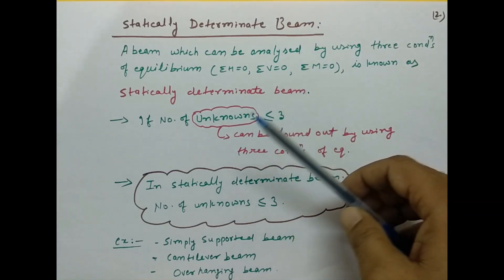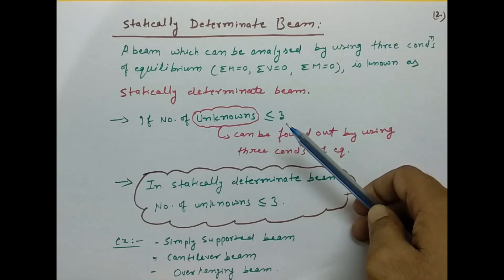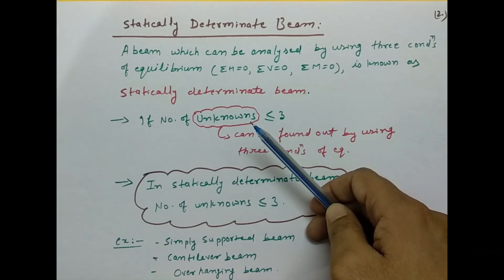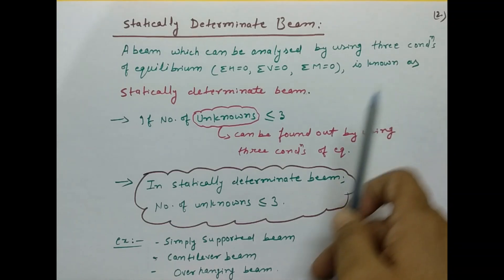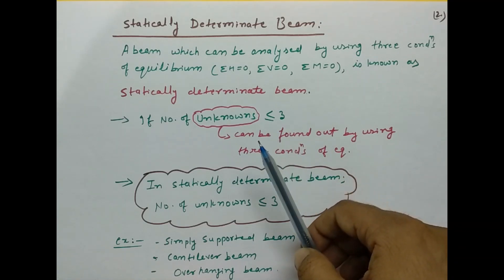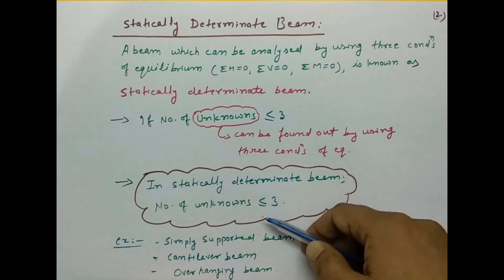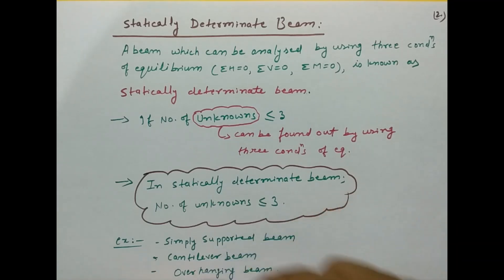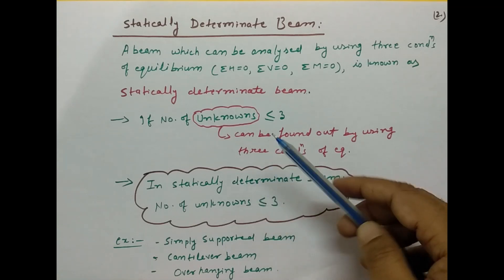Statically determinate beam में number of unknowns less than or equal to 3 होता है, जिन्हें हम conditions of equilibrium की help से calculate कर सकते हैं। In short, statically determinate beam में number of unknowns maximum 3 होते हैं। Examples: simply supported beam, cantilever beam, overhanging beam — ये statically determinate beam के examples हैं।